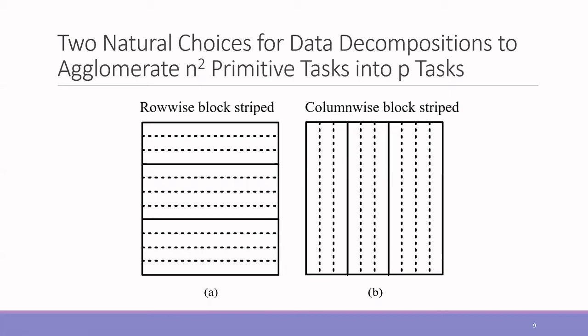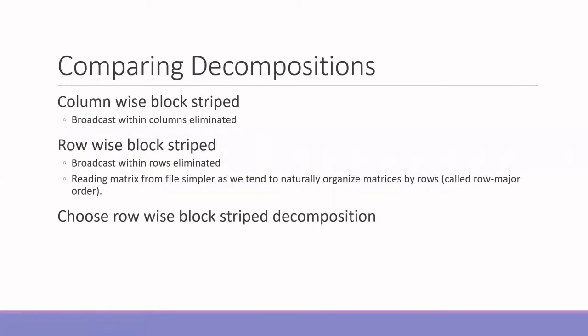Here we will compare the two decompositions. When you see that the column-wise block strip, the broadcasting within the column is actually eliminated. And in again row-wise block strip decomposition, the broadcast within the row is eliminated. But still in the column-wise stripping, we have to broadcast among the row. And again in row-wise stripping, we have to broadcast among the column. But here there is one advantage for row-wise block stripping.